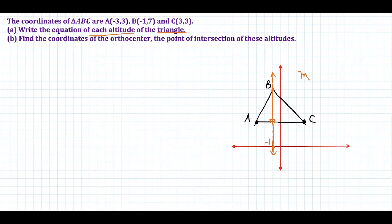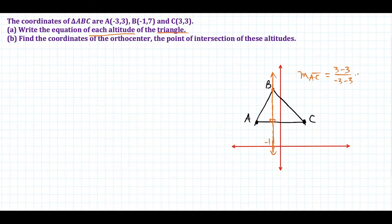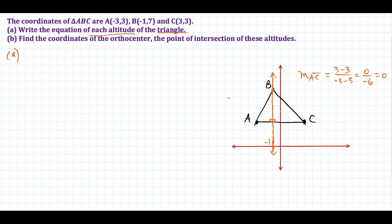If I wanted to be 100% sure that AC is horizontal, I could find the slope of segment AC by doing the difference of the y values: 3 minus 3, divided by the difference of the x values, negative 3 minus 3, gives us 0 over negative 6, which equals 0. So since the slope of AC is 0, AC is definitely horizontal, so the perpendicular line is vertical, which guarantees that x equals negative 1 is an altitude of this triangle.